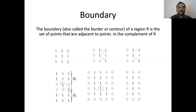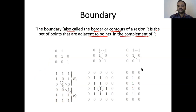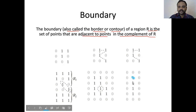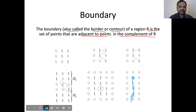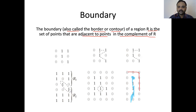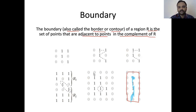Coming to the boundary — the boundary is also called the border or contour. It is the outline of a region. The boundary of R is the set of points that are adjacent to points in the complement of R. If we treat a particular area as a region of ones, we look at the pixels which are complement to this region — those form the outer boundary.